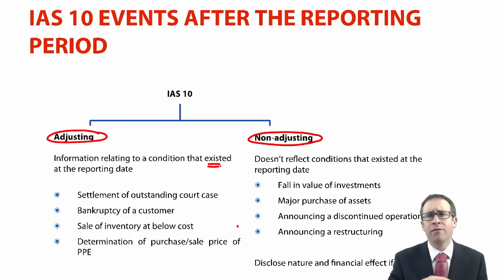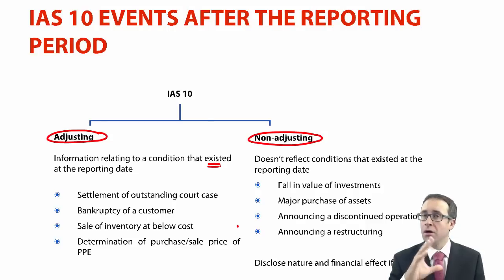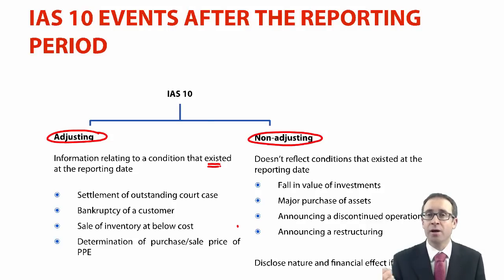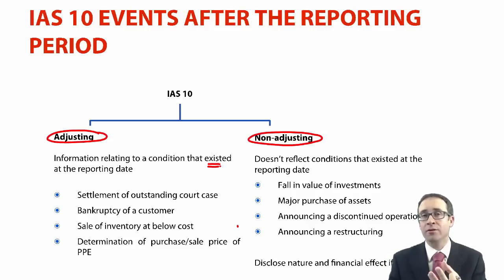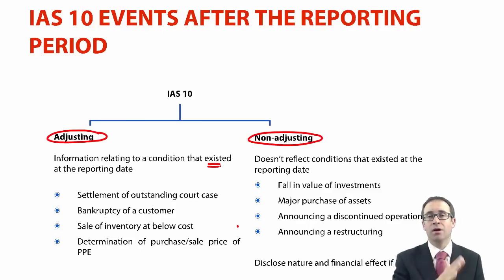Similarly, for an item to be discontinued, it needs to be classified as held for sale or disposed of. At the reporting date it wasn't held for sale because we did not meet the criteria — we only met the criteria in the post-reporting-date period. So therefore it will be discontinued from that point forward.